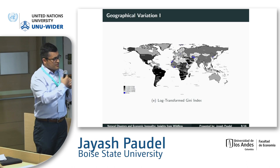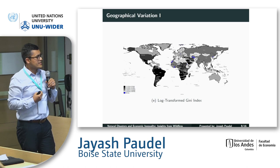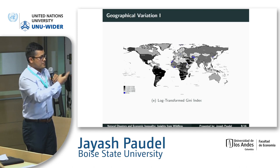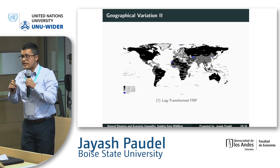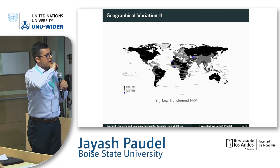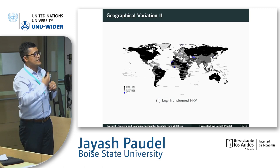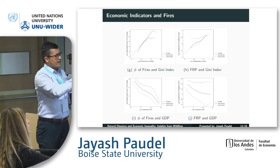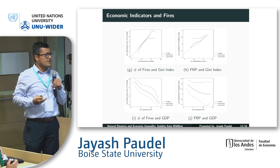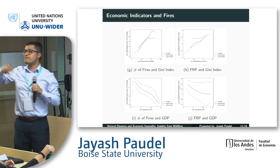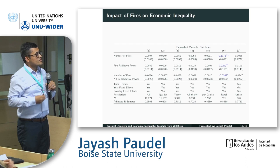There's a lot of geographical variation in both economic inequality and the stock of fire events. The darker the color, the higher the value of the Gini index — blue dots indicate missing data. There's also a global map of fire radiative power, log-transformed, where darker colors indicate higher intensity of fire events from the satellite data. Before diving into the fixed-effect specification, I also collapse data at the country level to examine the correlation between these indicators, and you can clearly see that as the number of fire events increases, there's an increase in economic inequality.